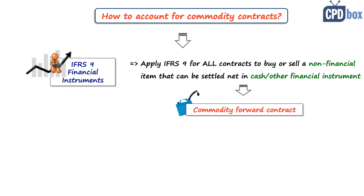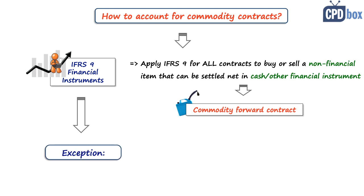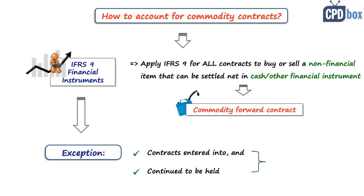But that's ugly, because in this case you would have to remeasure the commodity forward to its fair value at each reporting date and book it. But luckily IFRS 9 continues. The exception are the contracts that were entered into and continue to be held for the purpose of the receipt of the non-financial item in accordance with the entity's expected purchase, sale or usage requirements. In other words, IFRS 9 does not apply to so-called own-use contracts.